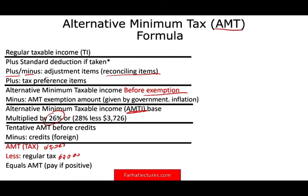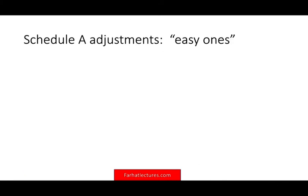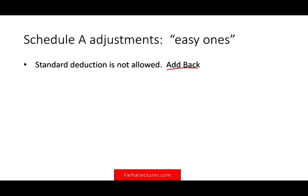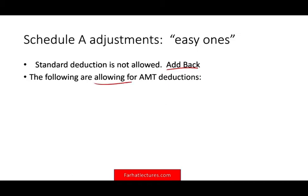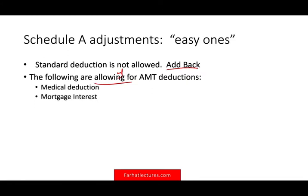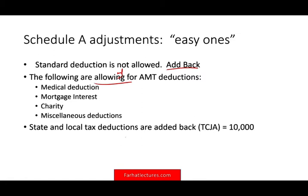Now let's look at the adjustments. If it's the standard deduction, you simply add it back. For Schedule A, if you itemized, the following deductions are still allowed for AMT: medical expenses, mortgage interest, charitable contributions, and miscellaneous deductions. However, state and local tax deductions are added back. Under the Tax Cuts and Jobs Act, the maximum you can deduct on Schedule A is $10,000, so you might have to add back $10,000 of state and local deductions.